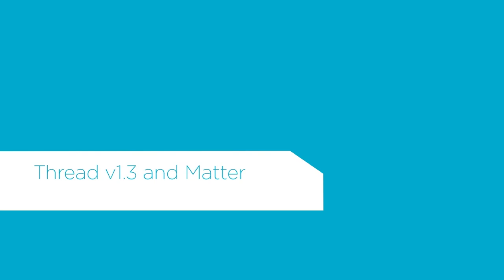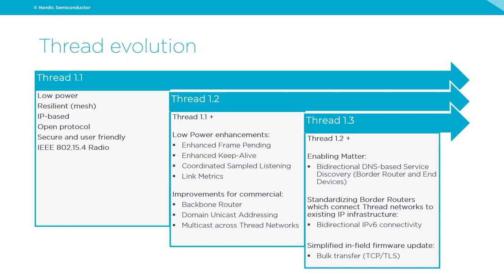Let's move on to Thread version 1.3 and Matter. Thread 1.1 brought low power, resilience, IP-based mesh, open protocol, high security, and was based on the IEEE 802.15.4 radio standard. Thread 1.2 was essentially Thread 1.1+ with low power enhancements including enhanced frame pending, enhanced keep alive, coordinated sample listening, and link metrics. It also brought improvements for commercial settings: backbone router, domain unicast addressing, and multicast across Thread networks.